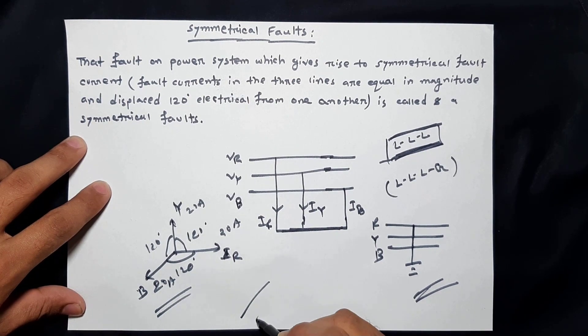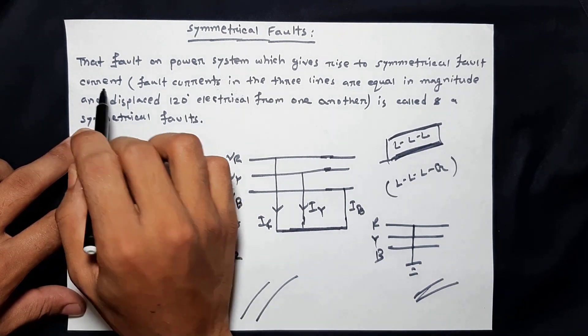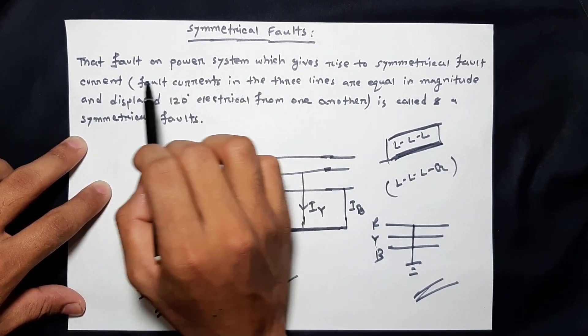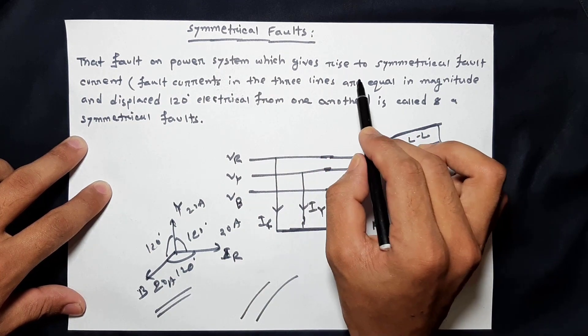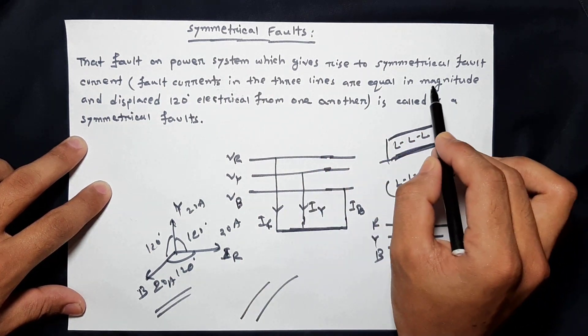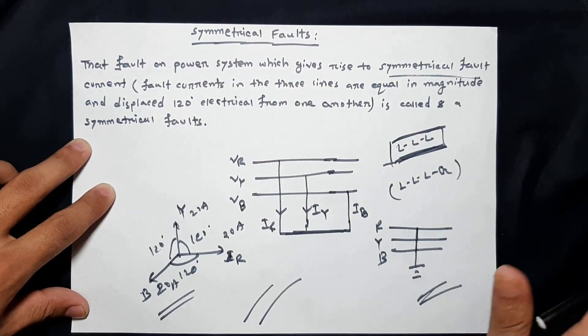Now we have to note which fault on the power system gives rise to symmetrical fault current. Symmetrical fault current is the same in all three phases.